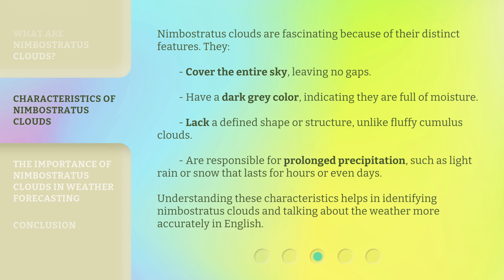They are responsible for prolonged precipitation, such as light rain or snow that lasts for hours or even days. Understanding these characteristics helps in identifying Nimbostratus clouds and talking about the weather more accurately in English.